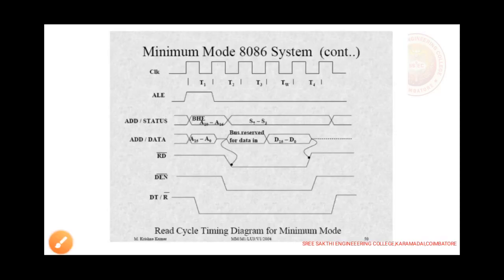Now we look at the read cycle for the 8086 processor. Normally we have four pulses: T1, T2, T3, T4. During T1, ALE is enabled; the latches separate the address from the multiplexed address and data line. During T1, A19 to A16 are selected. From T2 to T4, S7 to S3 (status pins) are selected. During T1, A16 to A0 are selected; afterwards the data is demultiplexed from the multiplexed address and data lines. Read bar equals 0 is selected from T2 to T4. DEN equals 0 is selected from T2 to T4.